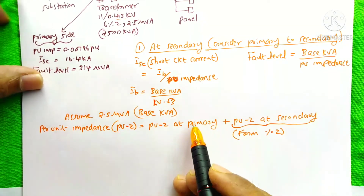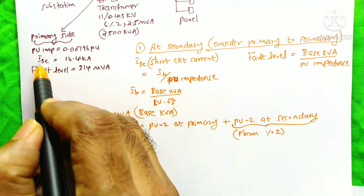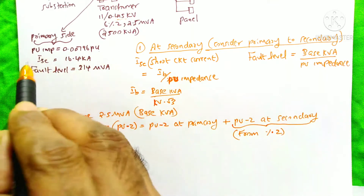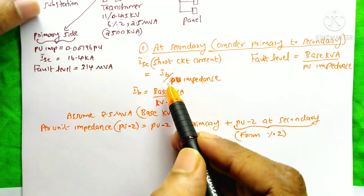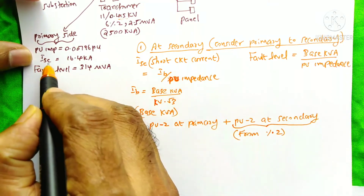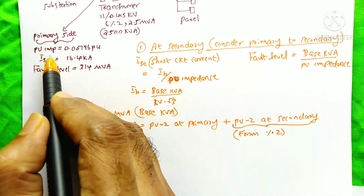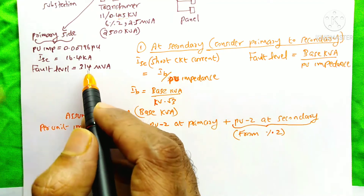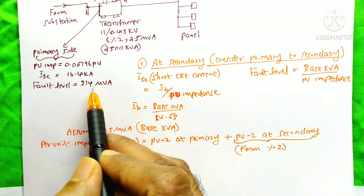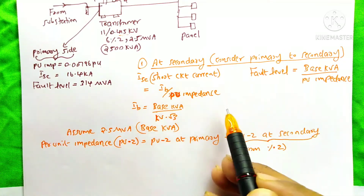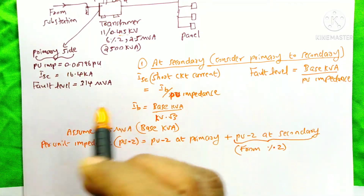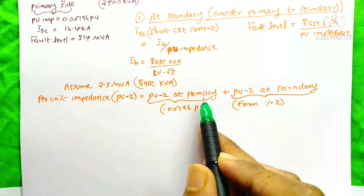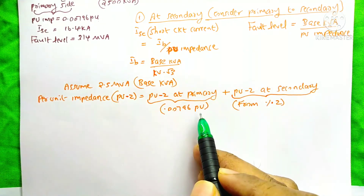If you don't have the per unit impedance at the primary, and you only have the short circuit current or fault level, you can easily find the per unit impedance using ISC equals IB divided by per unit impedance, or the fault level equals base kVA divided by per unit impedance. But here we already have this data, so we directly put this value. Our per unit impedance at the primary side is 0.00796 per unit.